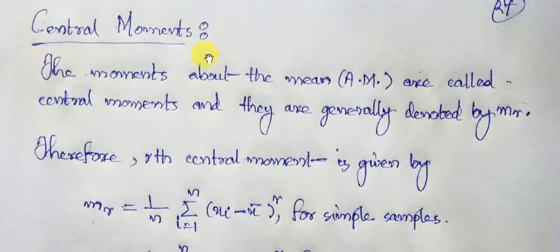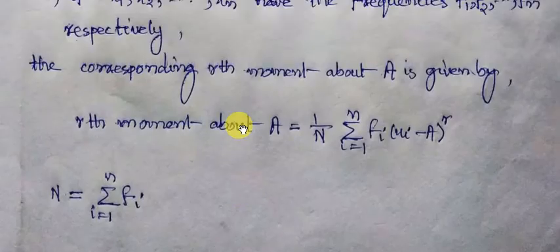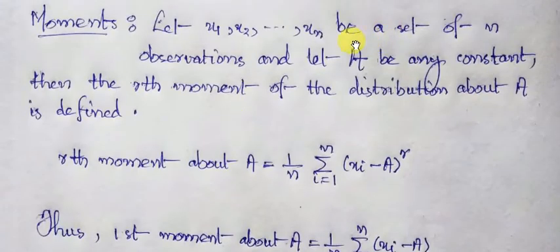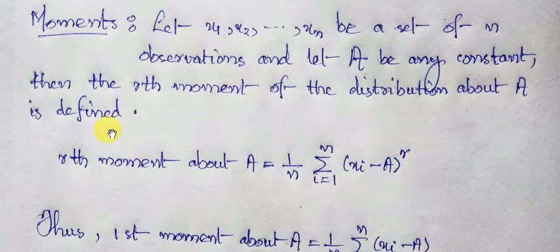The central moment is when we restrict the capital A in the general definition of moment — as the arithmetic mean for a set of observations x₁, x₂, ..., xₙ. We shall first consider observations without frequency, and then derive the same result for statistical observations with frequencies.